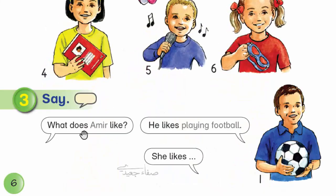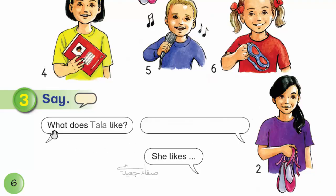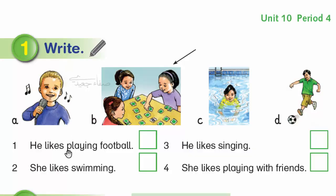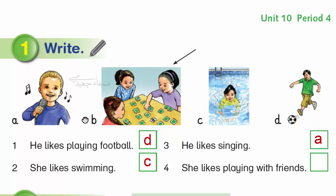What does Amir like? He likes playing football. What does Tala like? She likes dancing. But what do I like most of all? Playing with my friends.